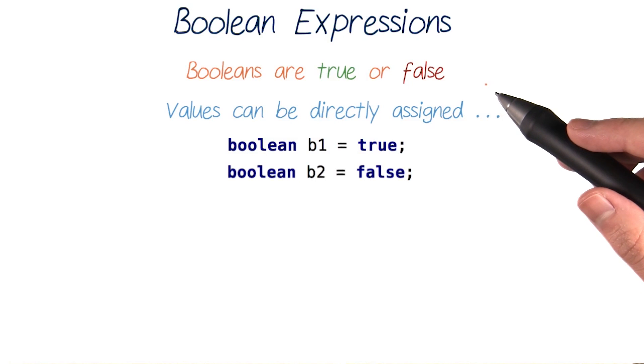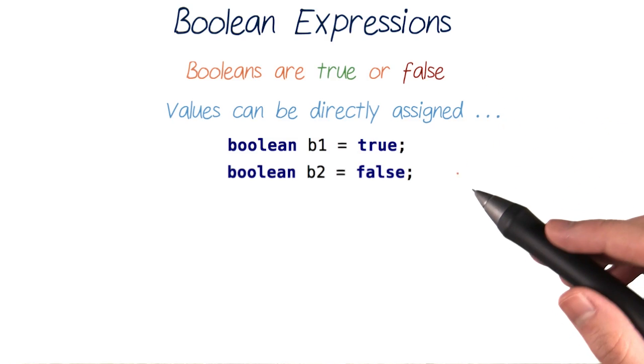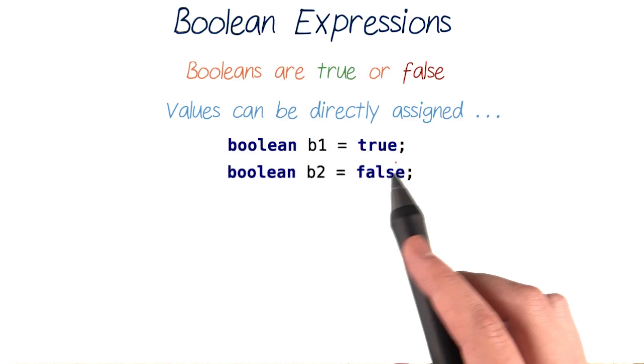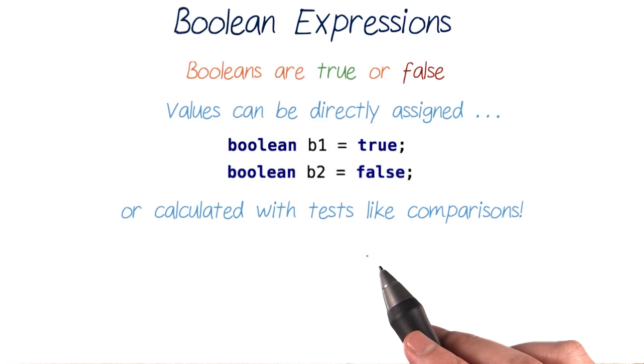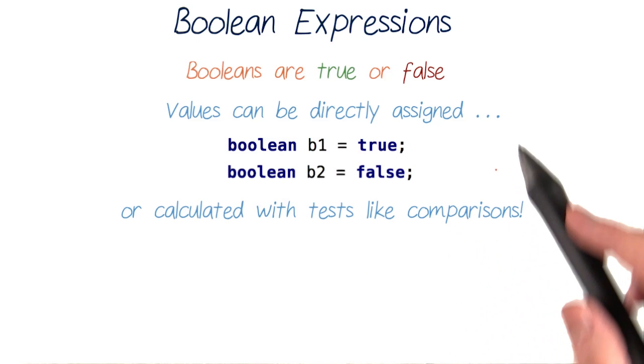We've talked about how booleans take on the value of either true or false. And so far, we've been directly assigning that value, like with the code boolean b1 equals true and boolean b2 equals false. But boolean values can also be calculated by doing tests like comparisons. And these are called boolean expressions.